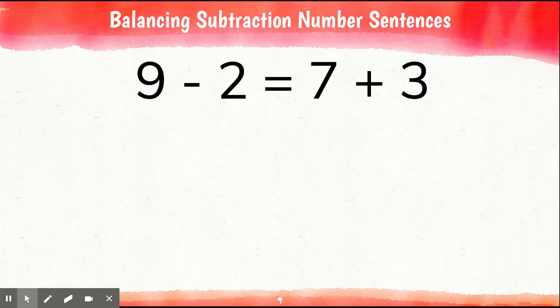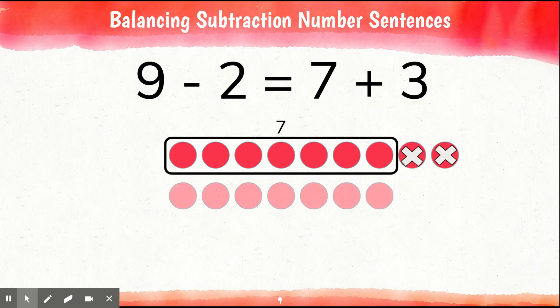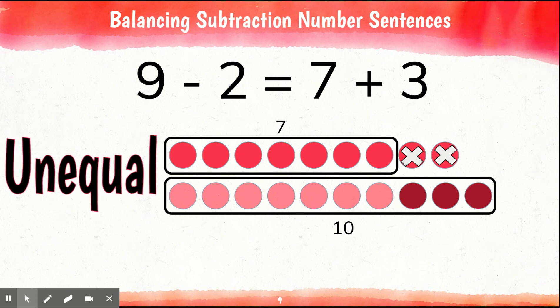Okay, last one. We have 9 minus 2 is equal to 7 plus 3. Do you think this is equal or unequal? Let's see if you're correct. We have 9 counters — we're going to take away 2. That leaves us with 7. Here we have 7 counters and we're going to add 3 more. That's a total of 10. This is an unequal equation. Did you get all of them right? If so, you're doing fantastic. Awesome job balancing both addition and subtraction equations today. Bye-bye.